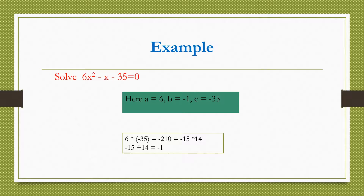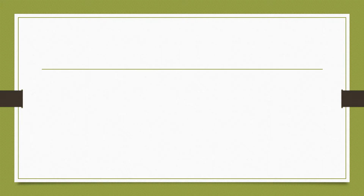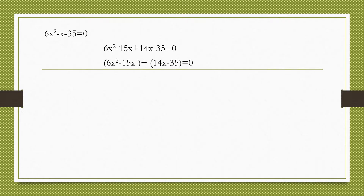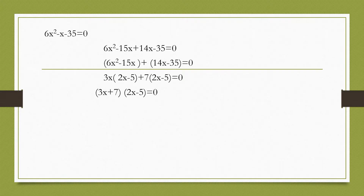Minus 15 into 14 is equal to minus 210, and minus 15 plus 14 is equal to minus 1. So the given equation can be written as 6x square minus 15x plus 14x minus 35 equals to 0, or 3x into 2x minus 5 plus 7 into 2x minus 5 equals to 0. Since if a times b equals 0, then either a equals 0 or b equals 0, it gives either 3x plus 7 equals 0 or 2x minus 5 equals 0.